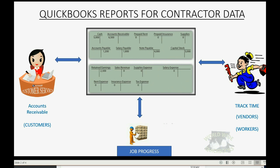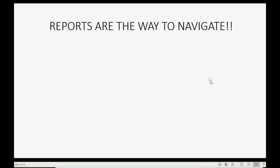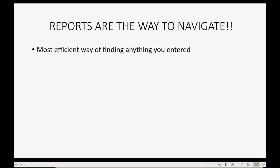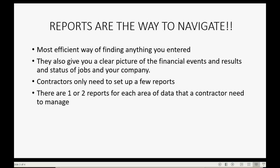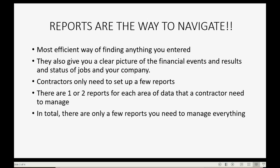All of these areas have to synchronize with the main area of data: the chart of accounts and the general ledger. Reports are the best way that contractors can navigate around their QuickBooks Online account — they're the most efficient way of finding anything you ever entered. They also give you a clear picture of financial events, results, and status of jobs and your entire company. Contractors only need to set up a few reports — one or two for each area of data.